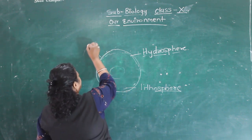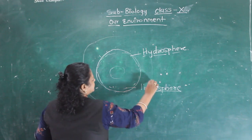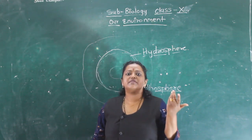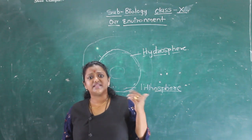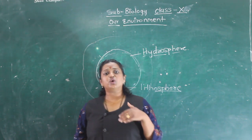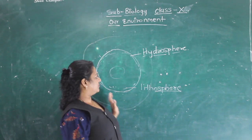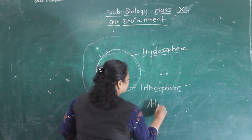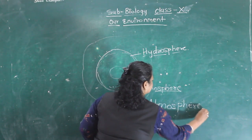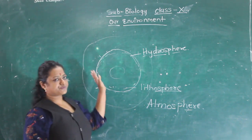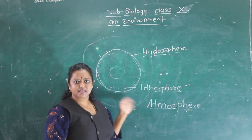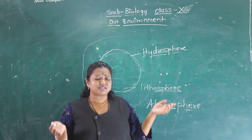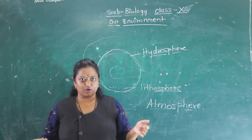Our earth is surrounded by a mixture of gases. Various gases are present — 78% nitrogen, 21% oxygen, and in traces various inert gases and carbon dioxide are present. This blanket of air which surrounds our earth is called the atmosphere. So lithosphere is the solid part, hydrosphere is the liquid part, and atmosphere is the air which surrounds the earth.